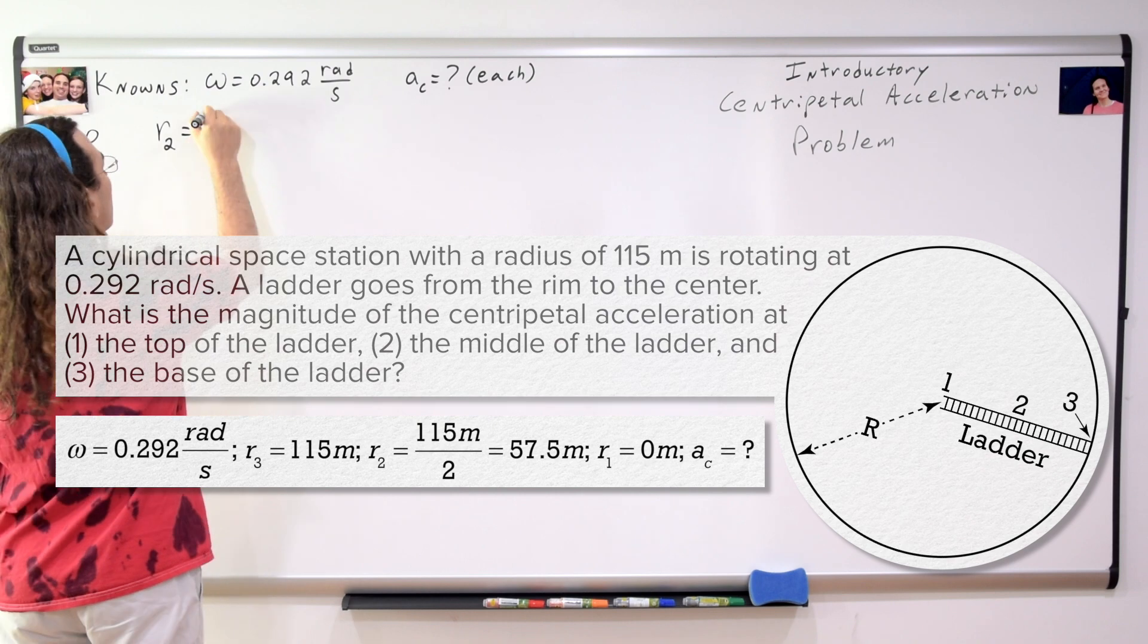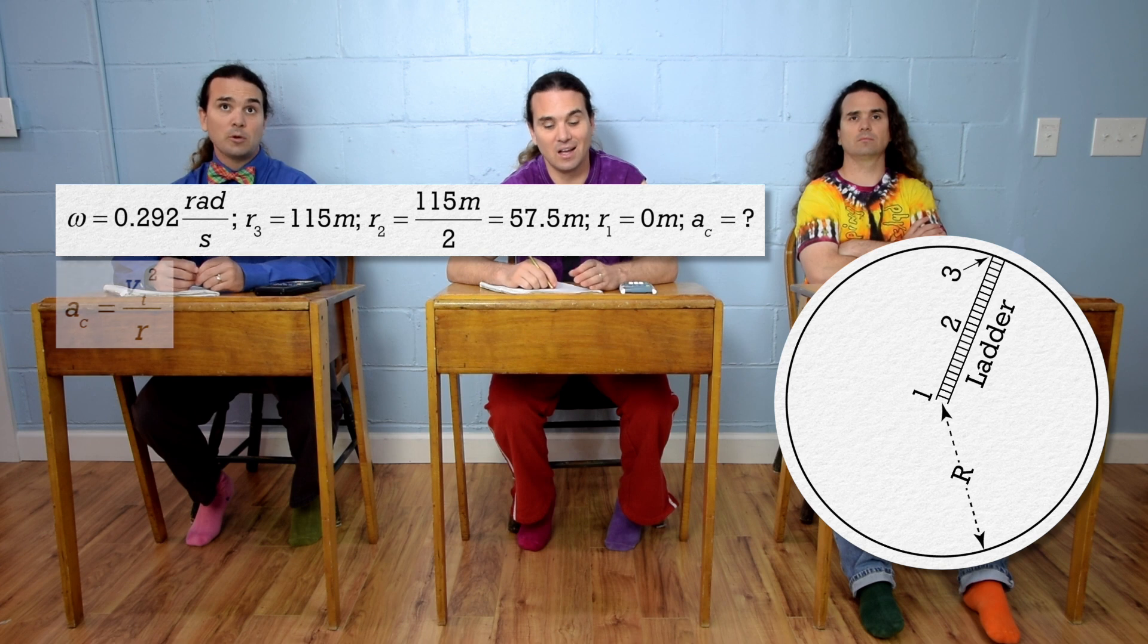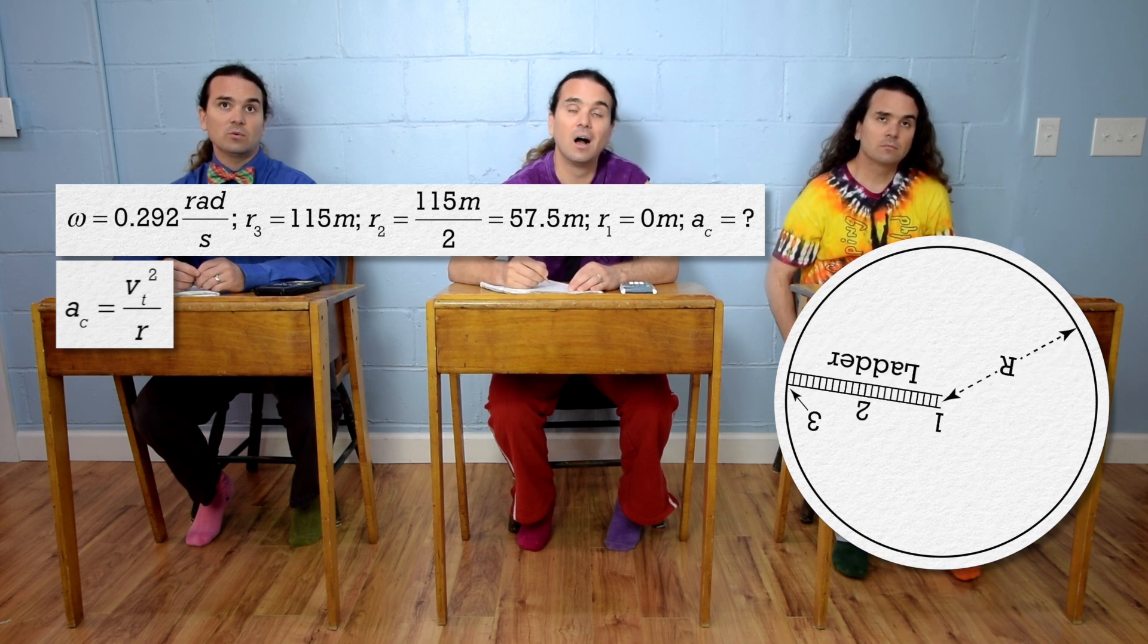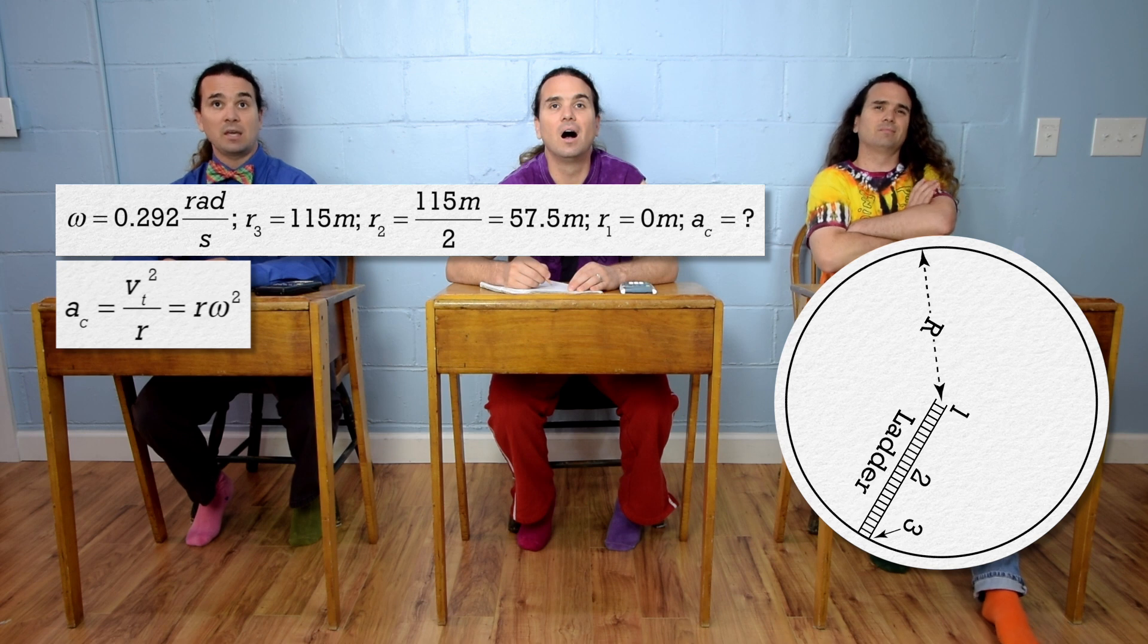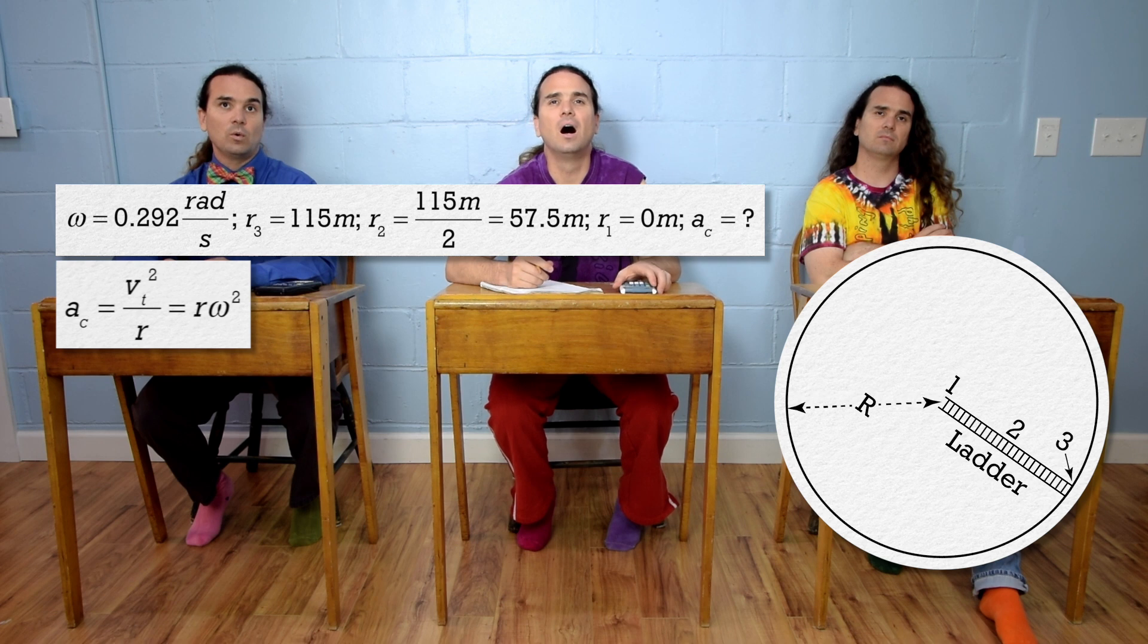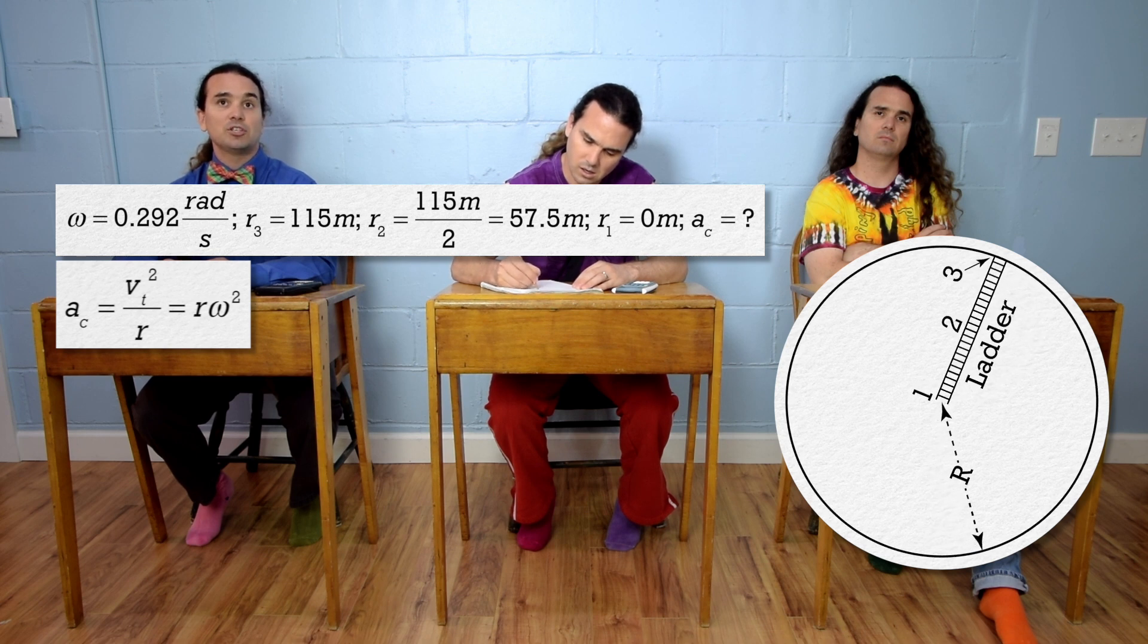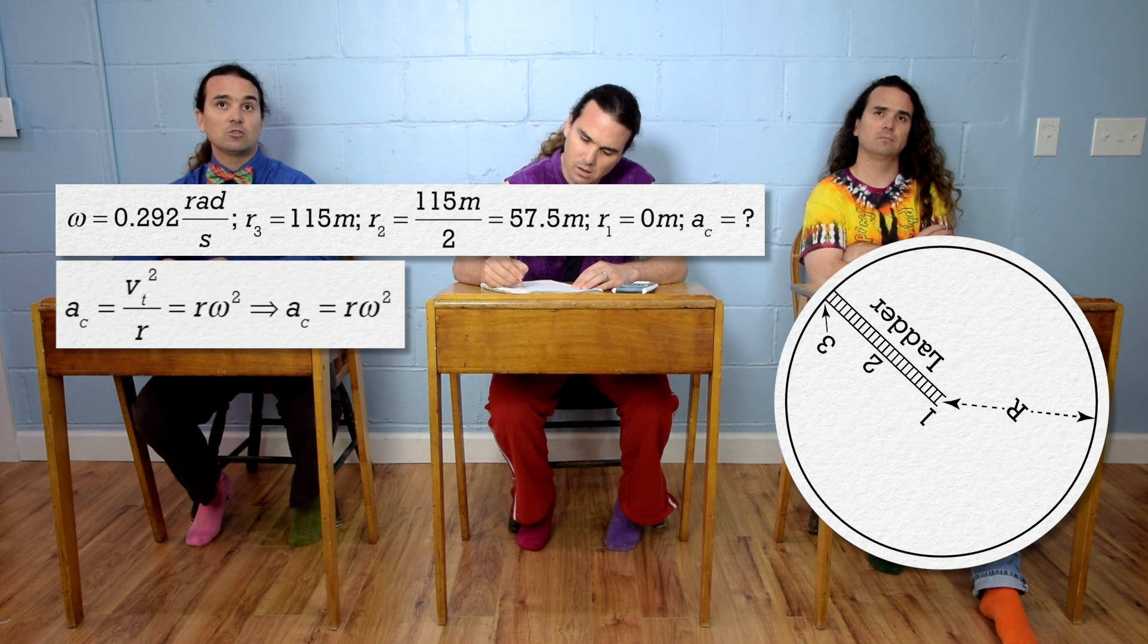Billy, please solve all three parts. Okay, centripetal acceleration equals tangential velocity squared divided by radius, and centripetal acceleration also equals radius times angular velocity squared. Because the space station's velocity was given in radians per second, we know 0.292 radians per second is an angular velocity, therefore we should use radius times angular velocity squared for the centripetal acceleration.